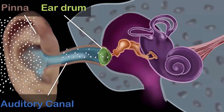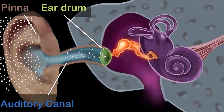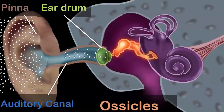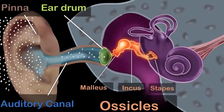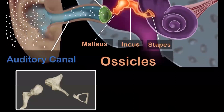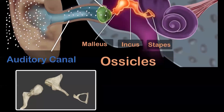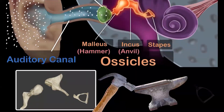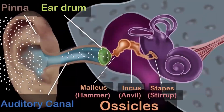The middle ear consists of the three tiniest bones of the human body, together called the ossicles. Their scientific names are the malleus, the incus, and the stapes. Because of their shapes, they are also commonly called the hammer, the anvil, and the stirrup — the stirrup being where you rest your feet when riding a horse.